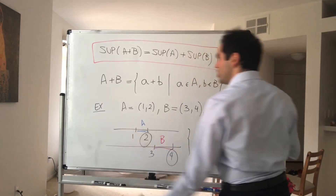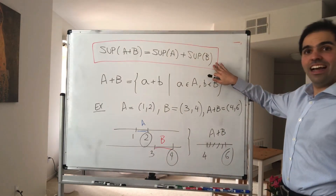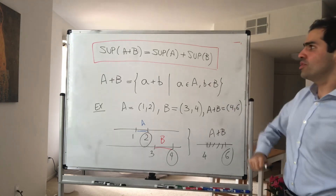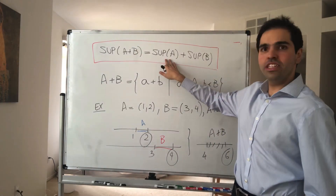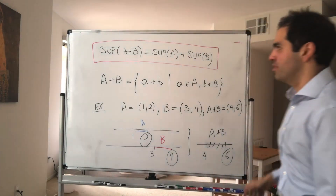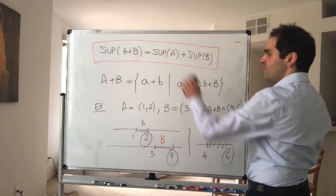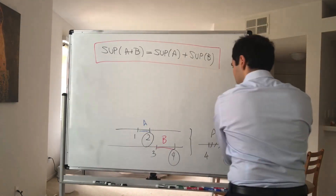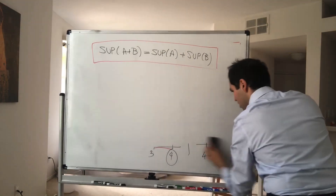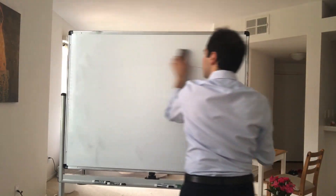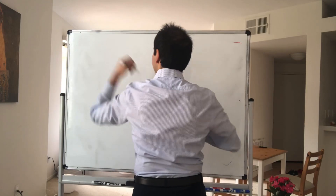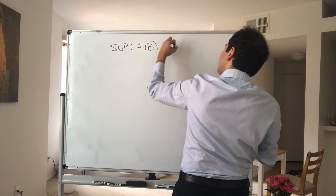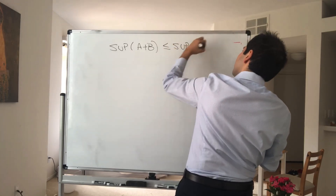The question is how do we show this? A nice thing in analysis is: if you want to show two things are equal, you just show that one is less than or equal to the other, and then the other is less than or equal to the first. So let's first show the easy part, which is that the supremum of A+B is less than or equal to the supremum of A plus the supremum of B.